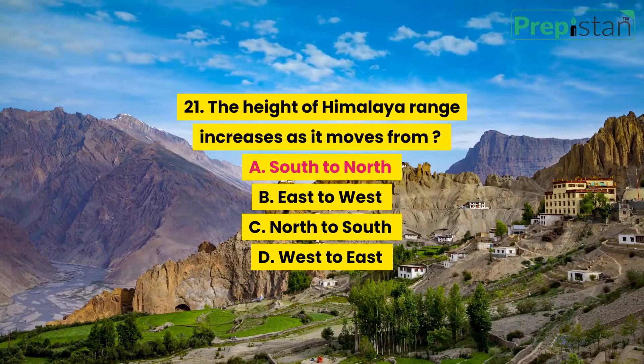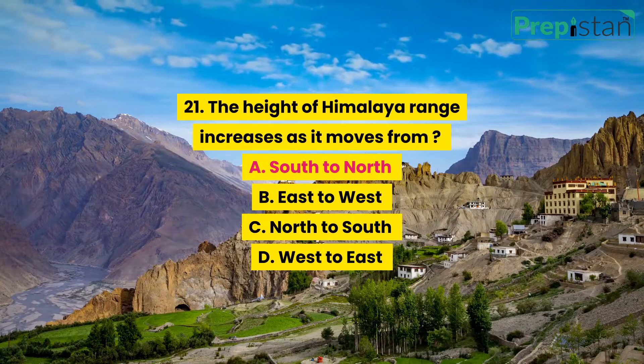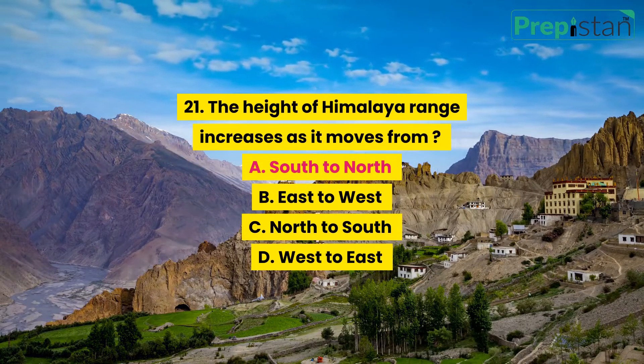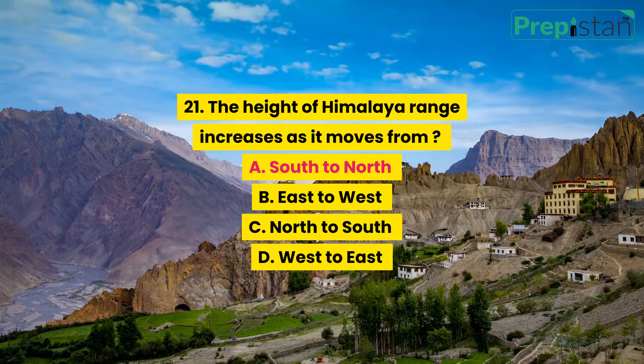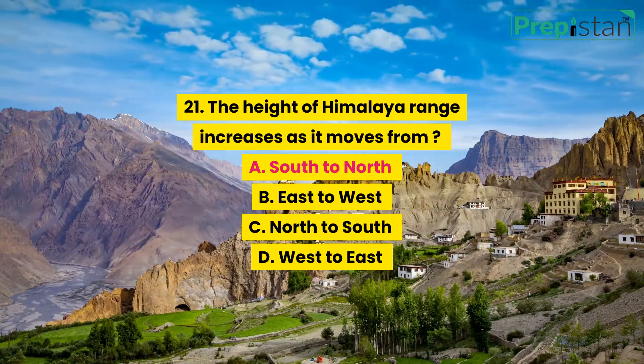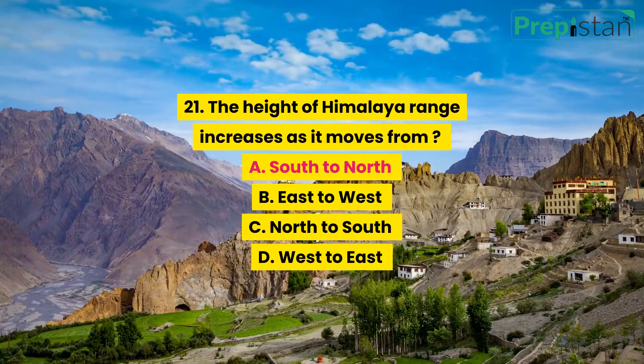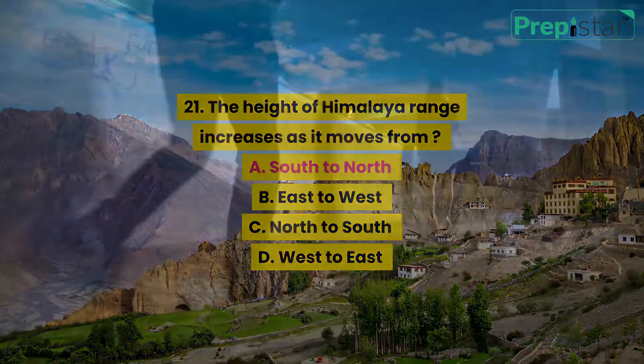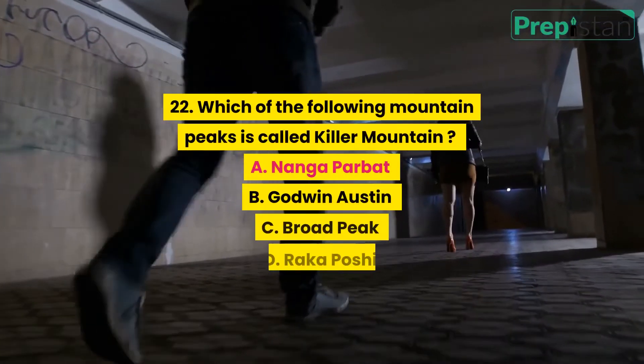Question 21: The height of Himalaya range increases as it moves from: A. South to North, B. East to West, C. North to South, D. West to East.